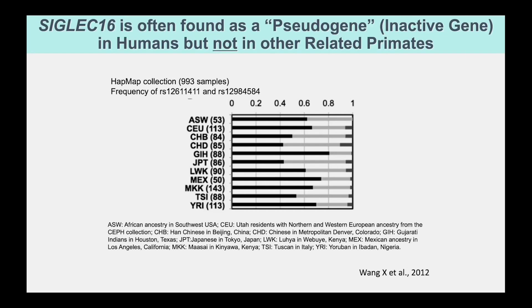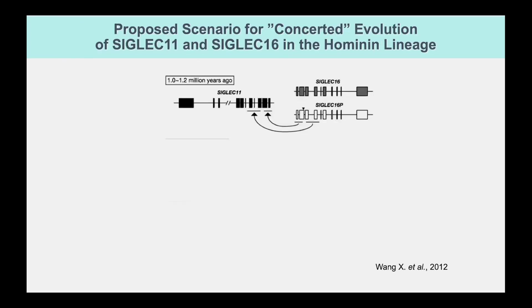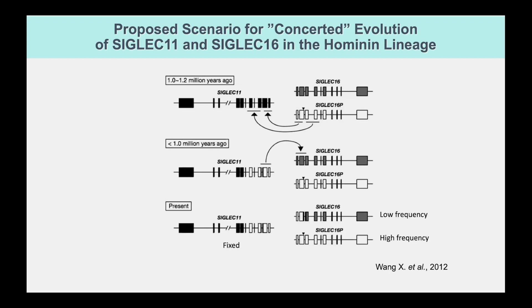The other peculiar part of the story is that Siglec-16, while found in all chimpanzees and all other apes, is knocked out in many humans — not in related primates. In fact, the majority of people watching this cannot express Siglec-16; the gene is mutated, it's called a pseudogene, an inactive gene. A whole series of complicated events occurred where these two genes modified each other over time and ended up in the current situation — all unique to human events. It's sort of like a murder mystery how all these things happened, and it seems to be specific to humans.